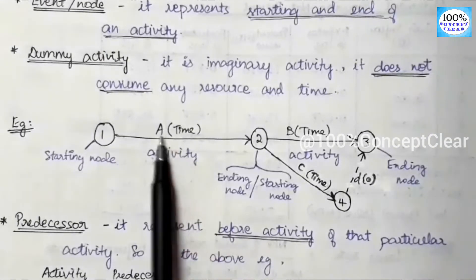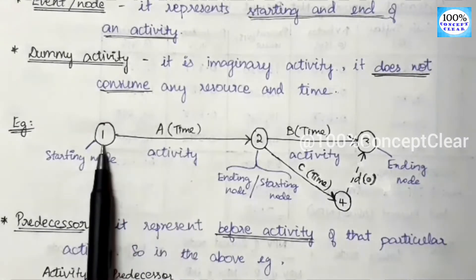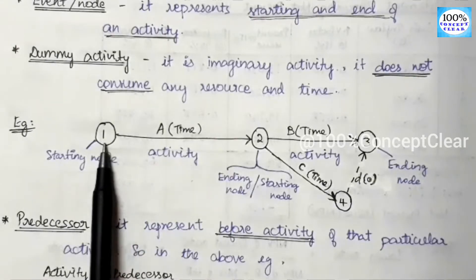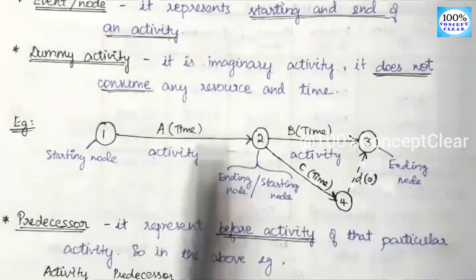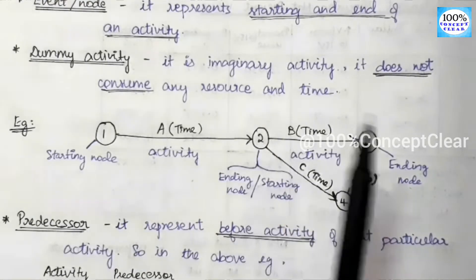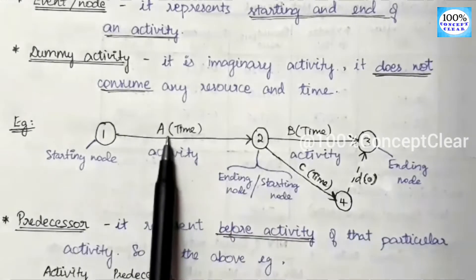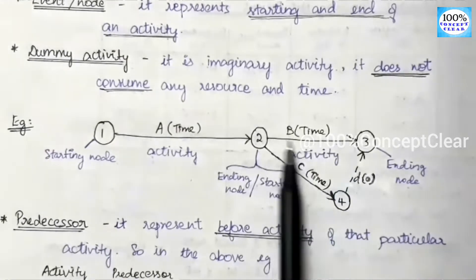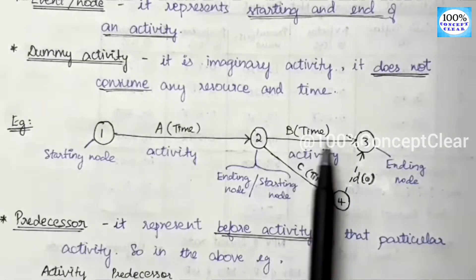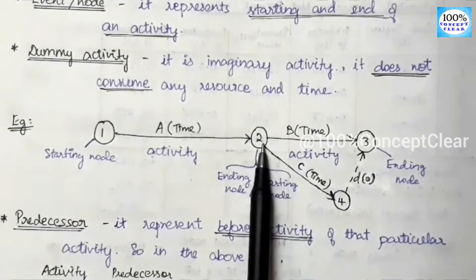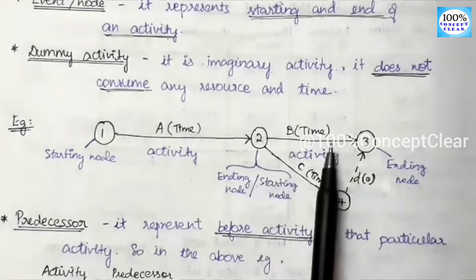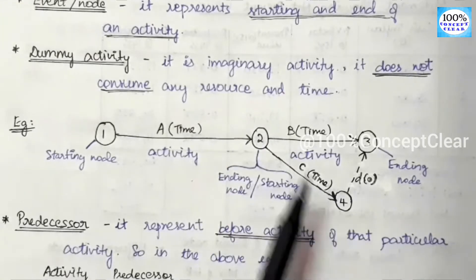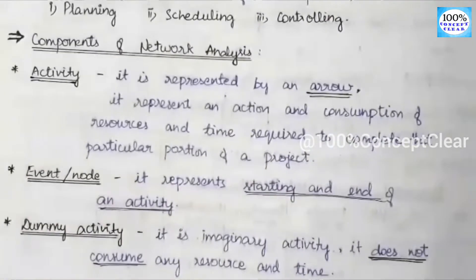For example, activity A has a starting node and an ending node. Node 1 is the starting node, and the ending node follows. So A activity starts at node 1. Then we have a second node and a third node. B activity has starting node 2 and ending node 3. We identify each activity by specifying its starting node and ending node.